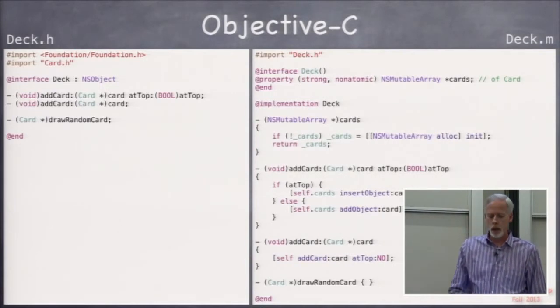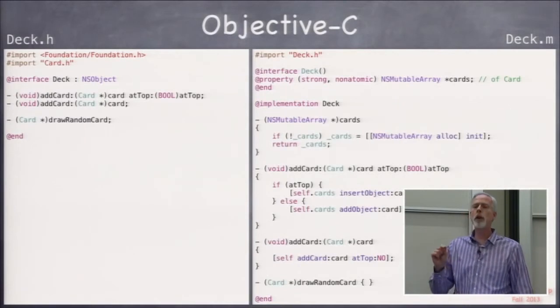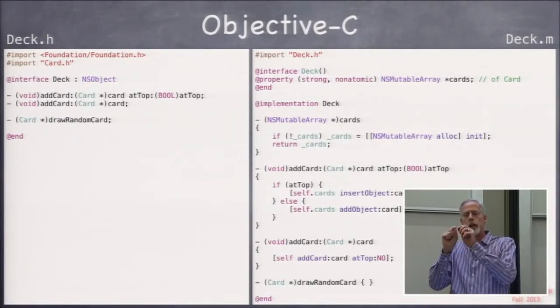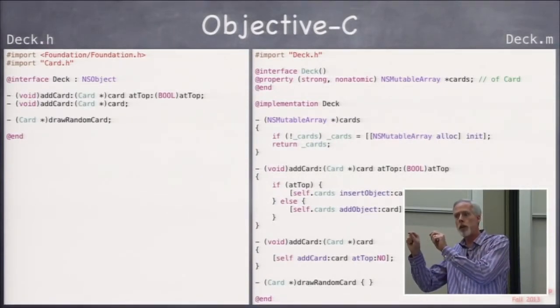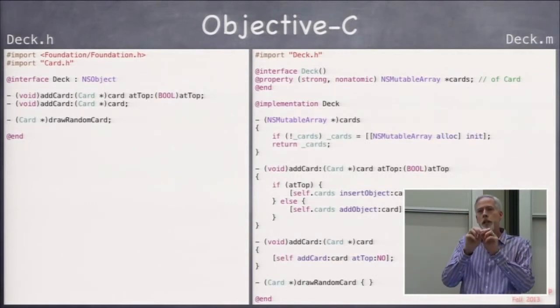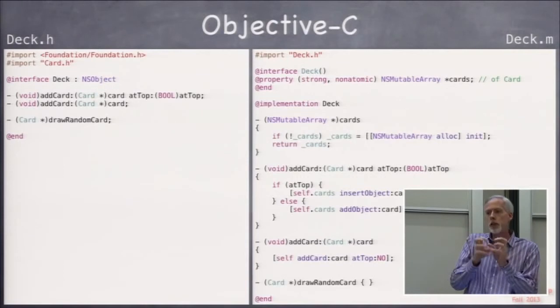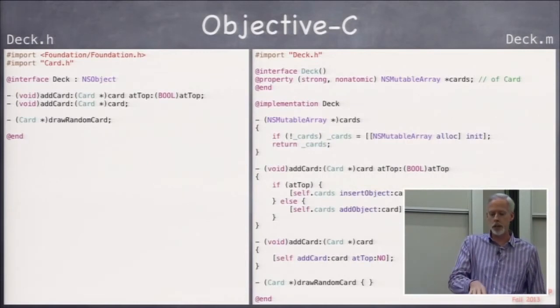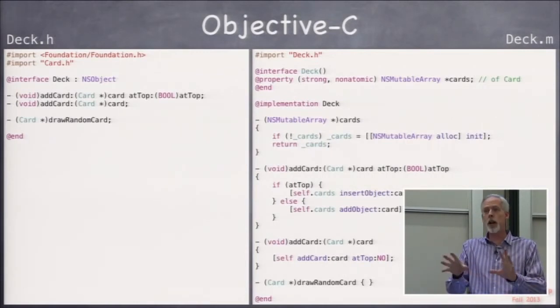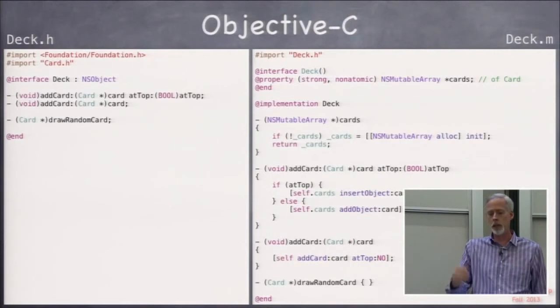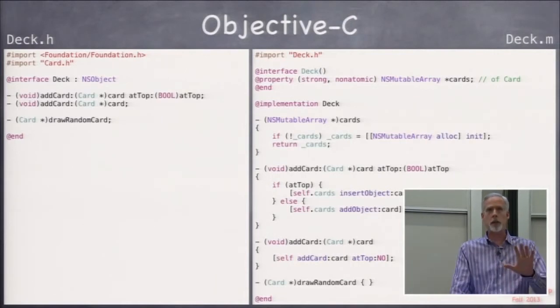The underscore is from last lecture. Remember that when we create a property, Objective-C automatically does @synthesize cards = _cards. In other words, it assigns an instance variable called underbar name of property to be the storage space for that property. That's why underbar cards are automatically created for us behind the scenes. That @synthesize doesn't pop up in our code, but it's there.